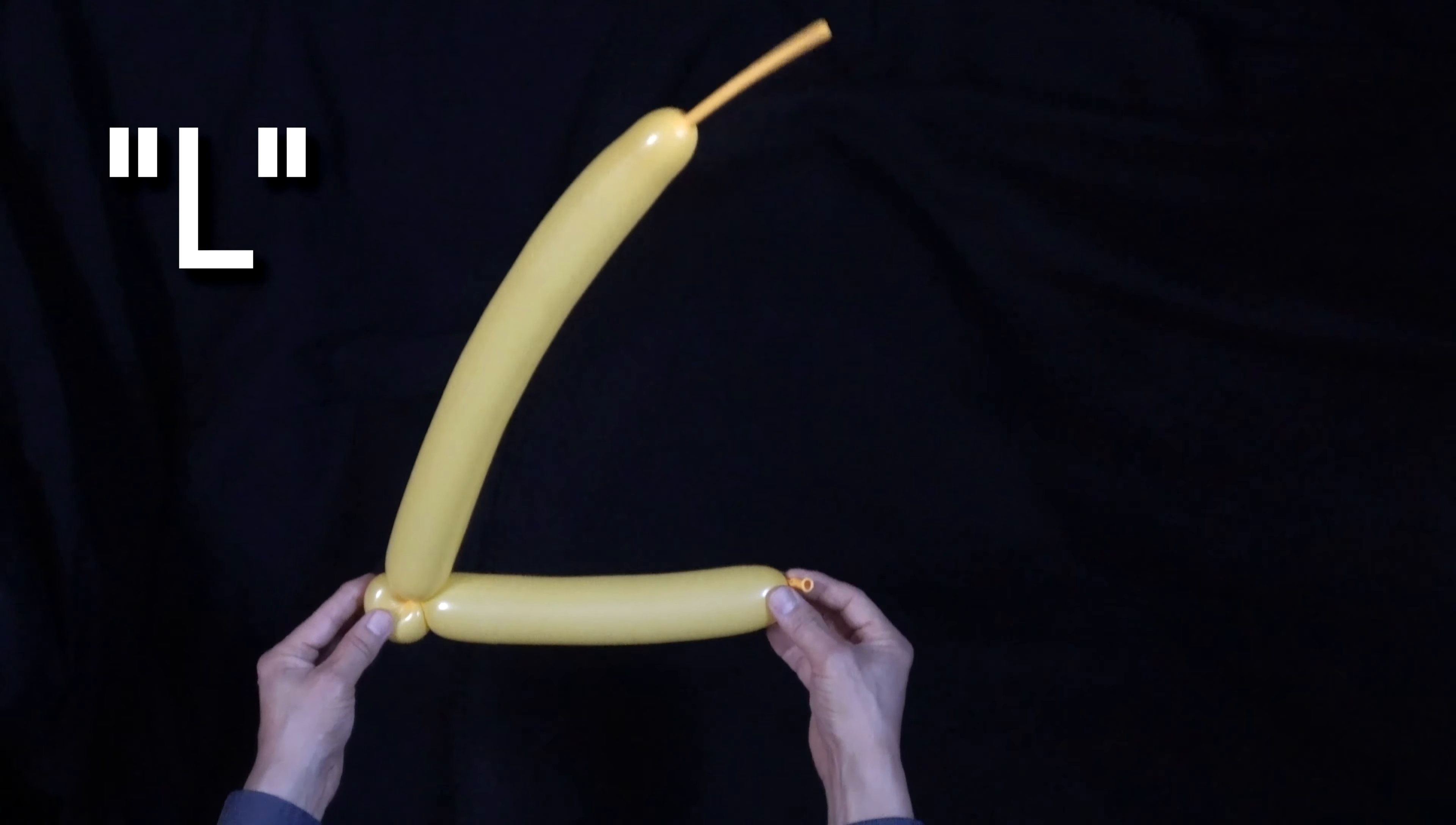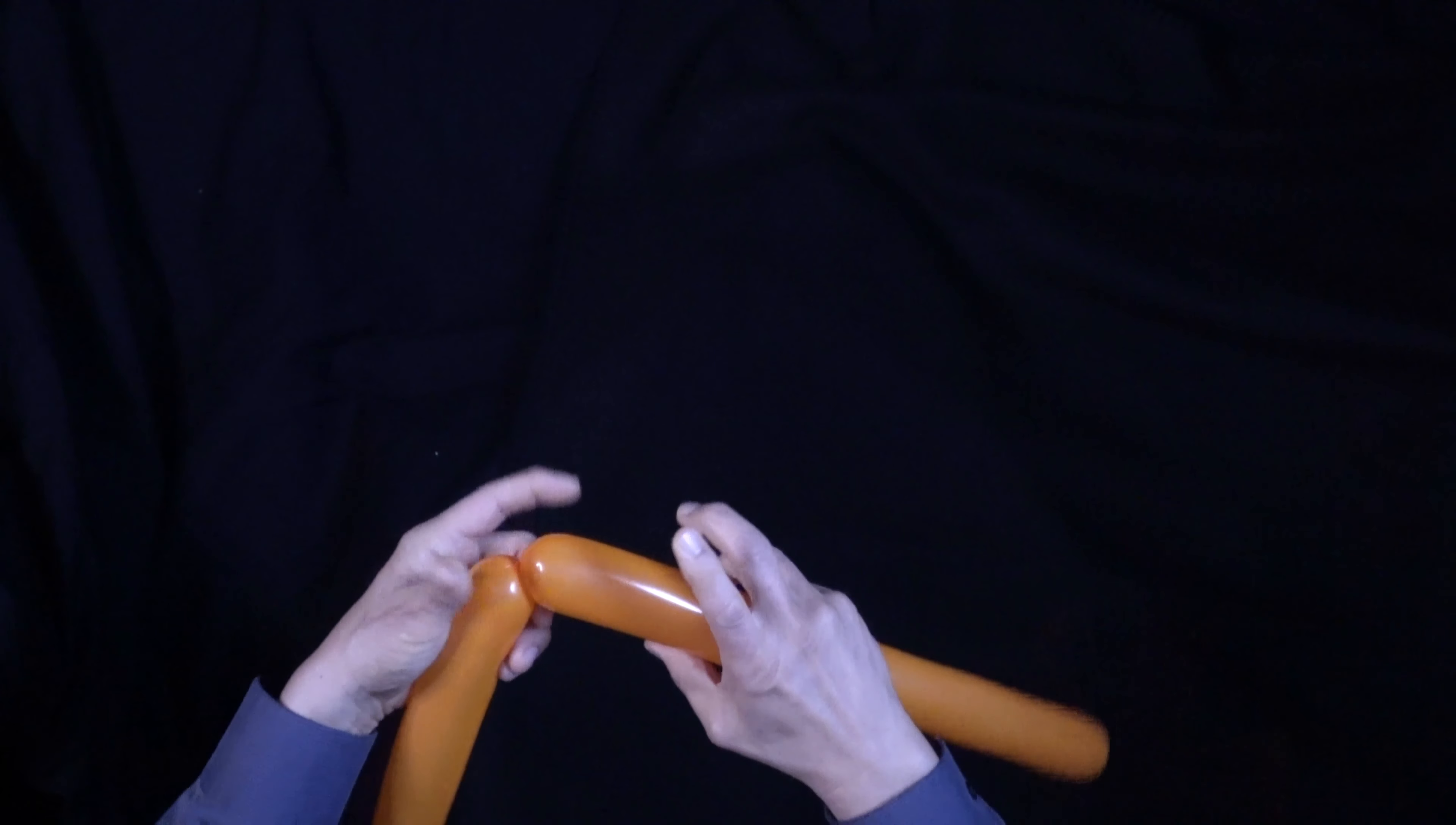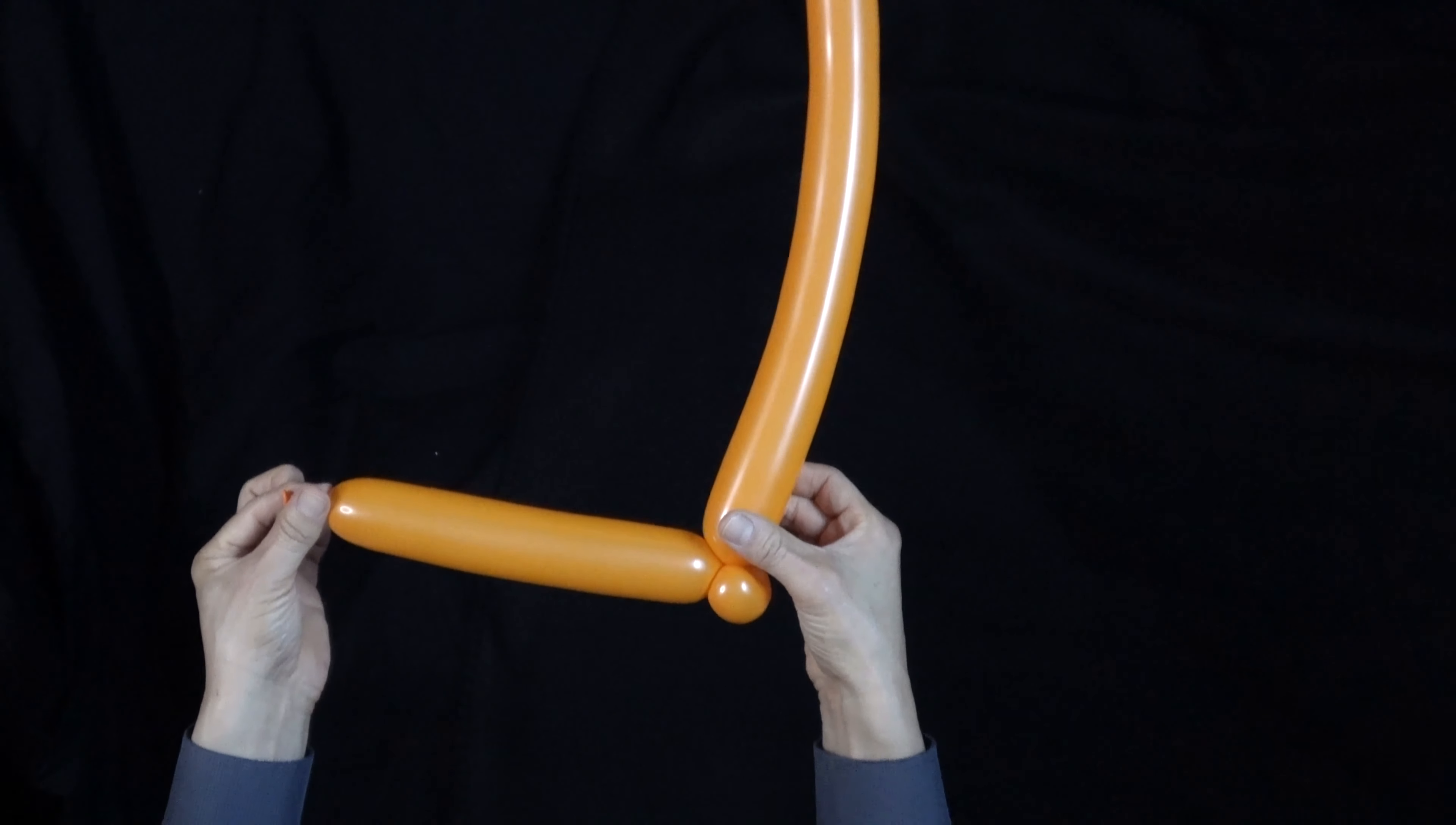You're essentially making an L here. Then we're going to repeat this with all three balloons. Try and match the distance so it's right about there. Small basic twist, turn it into a pinch twist. Balloon number two and number three, let's go right through that.